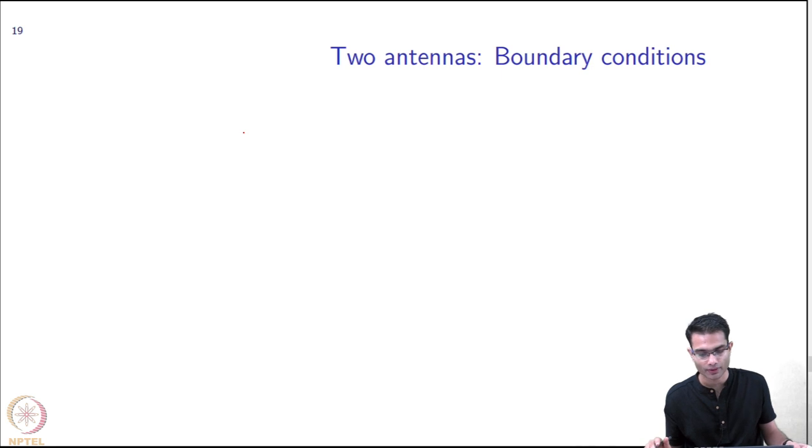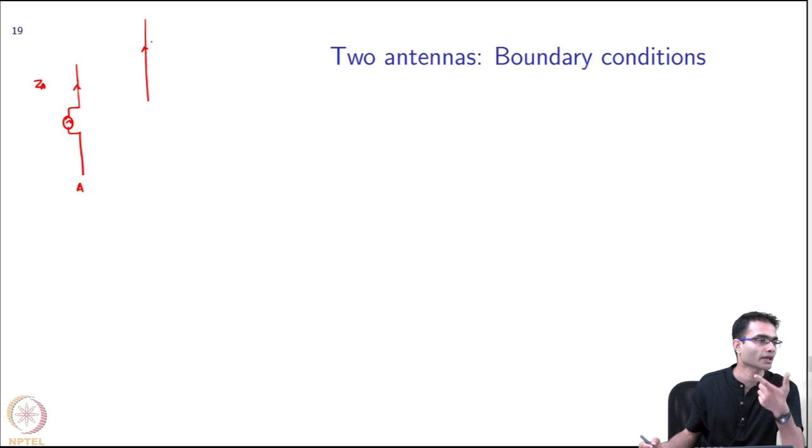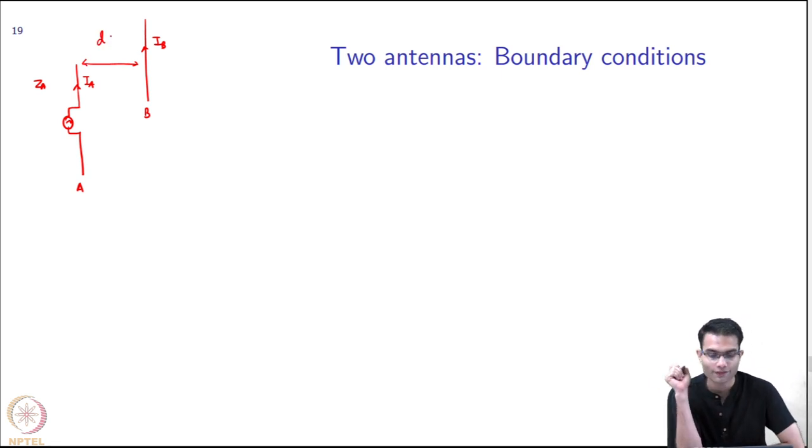The boundary conditions that we have - let us redraw this antenna over here. This is antenna A. For simplicity, what I am going to do is the antenna B, I am just going to make it passive, but I can easily add a generator to it. This is my antenna B and there is I_A here, I_B over here, some distance D apart.